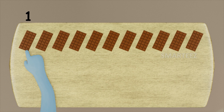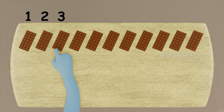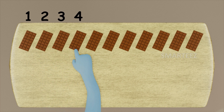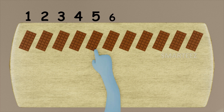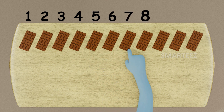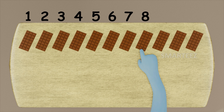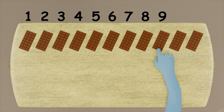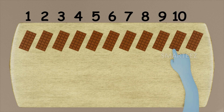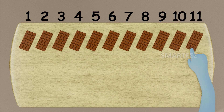That's one, two, three, four, five, six, seven, eight, nine, ten, and eleven. We have eleven chocolate bars.